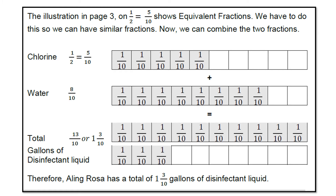Now we can combine the two fractions. The water is 8/10, and both the chlorine and water now have a denominator of 10, making them similar fractions. Counting all the shaded parts: 1, 2, 3, 4, 5, 6, 7, 8, 9, 10, 11, 12, 13 — so the total is 13 over 10. Since the numerator 13 is larger than the denominator 10, we convert it: 13 ÷ 10 = 1 and 3/10. Therefore, Aling Rosa has 1 and 3/10 gallons of disinfectant liquid.